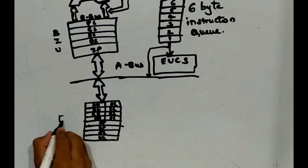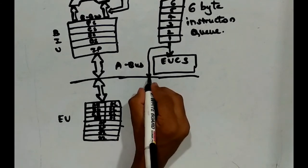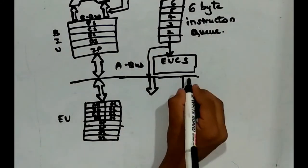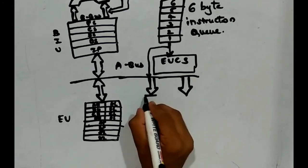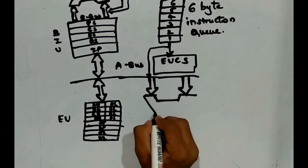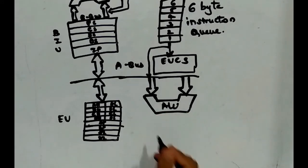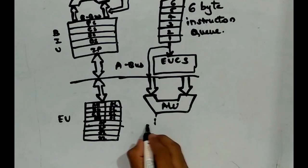This is the execution unit. And here we are going to draw the arithmetic logic unit. This is ALU, arithmetic logic unit. And here are the flags.